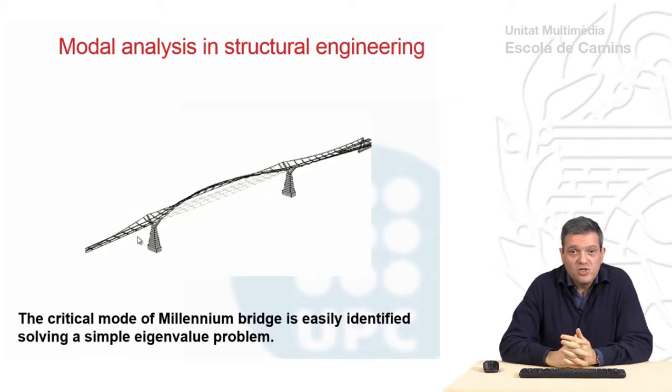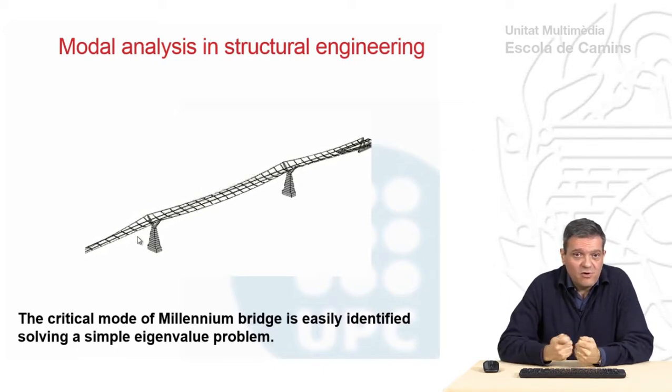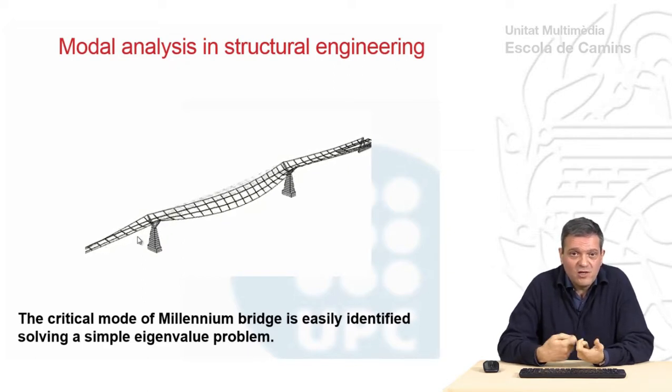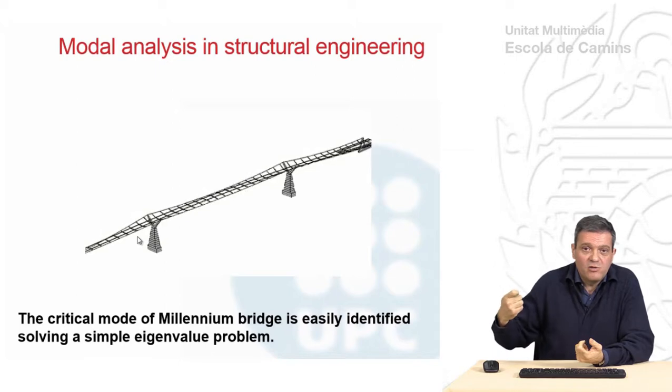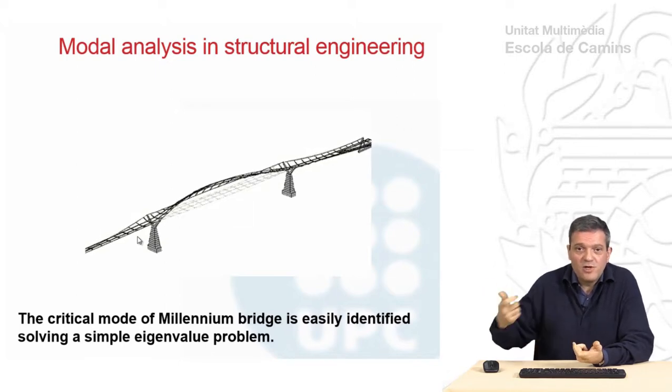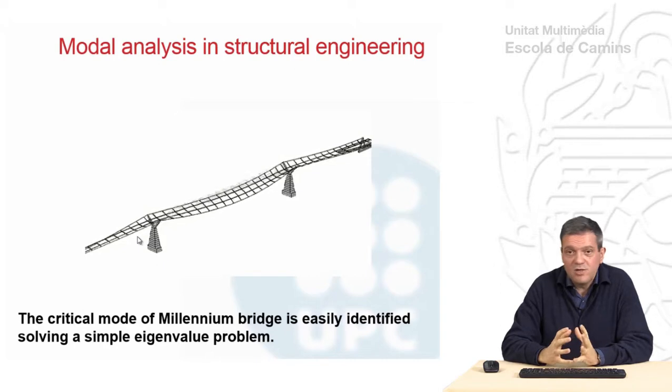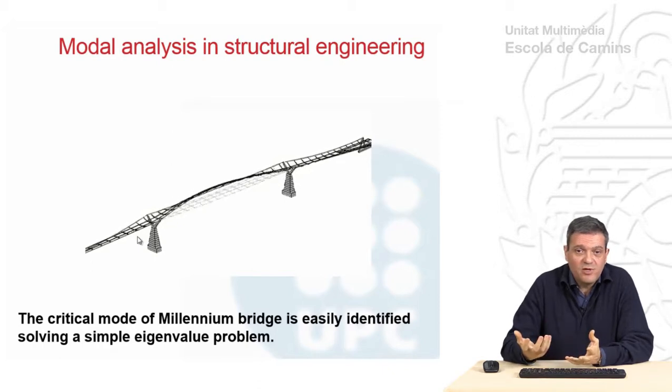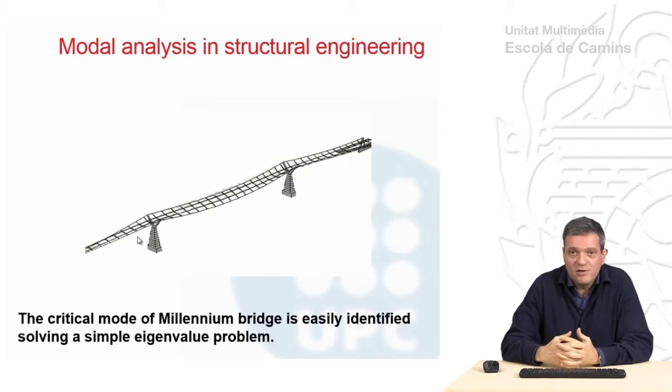This could be fixed after reinforcing, increasing k, or modifying k, such that you take out the lambdas of the range of possible excitations. That's the recipe you can follow in order to redesign the bridge after you know that something goes wrong.